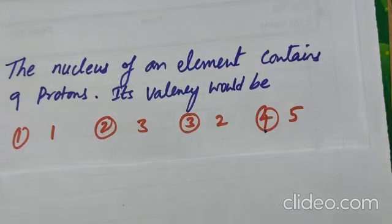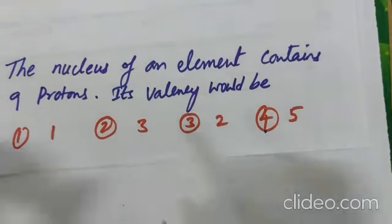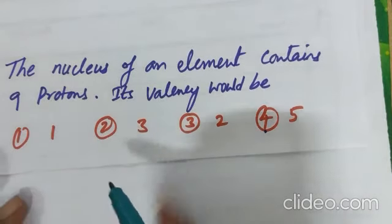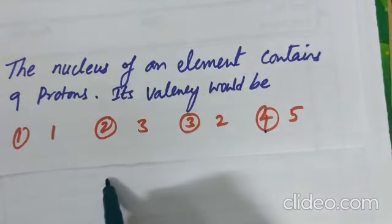Based on atomic number, based on electrons also, you can predict the valency of the element. 9 protons means the element is fluorine.